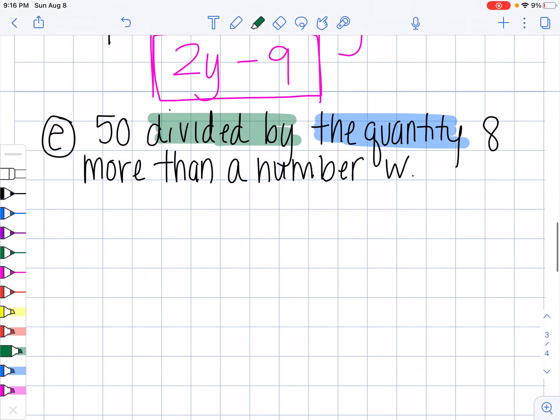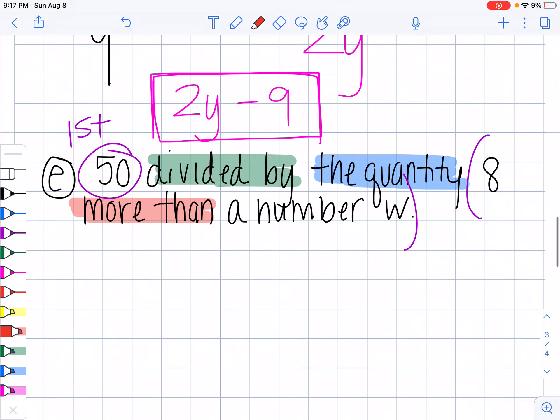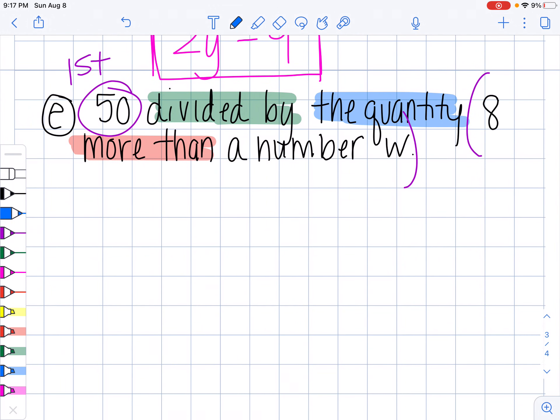So we have to figure out what the first part and what the second part are. So this is my first part, 50. And then the quantity, my second part is going to be this quantity, eight more than a number W. So here are more than, if I come back up here, more than, we've used that before. More than means I'm adding. So eight more than a number, so eight more than is adding a number W.